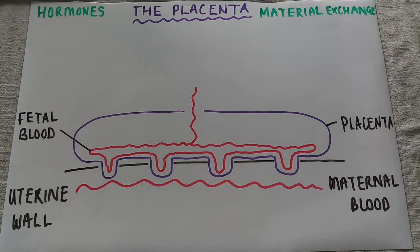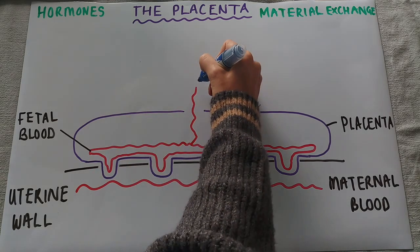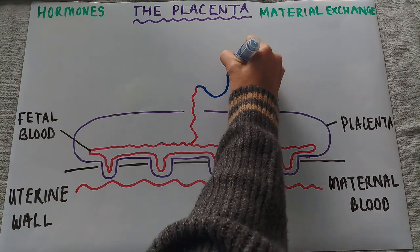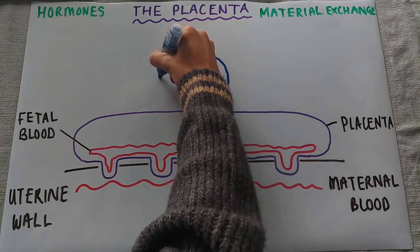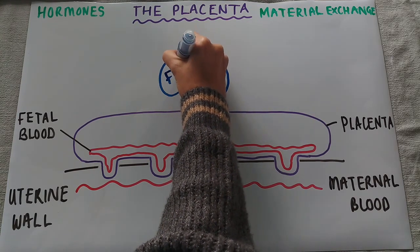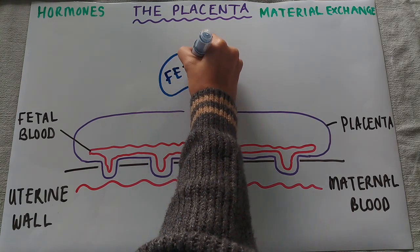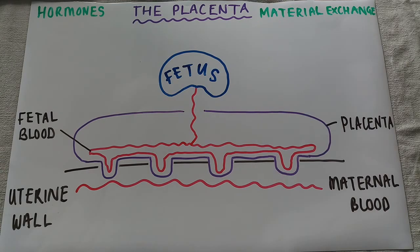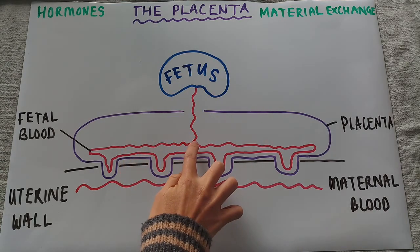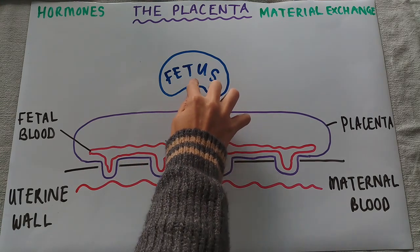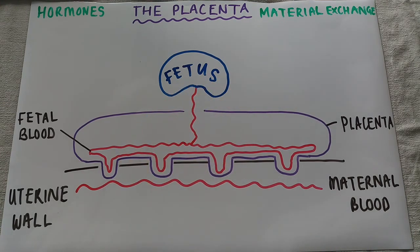I'm going to draw the fetus very simply — just as a little bean shape — as I'm a little worried it might become more creepy than scientific. So there we have the fetal blood going from the placenta up into the fetus.